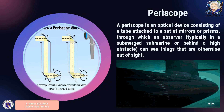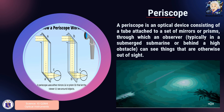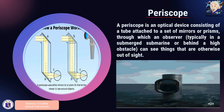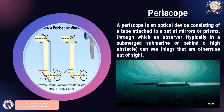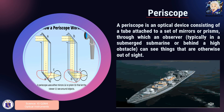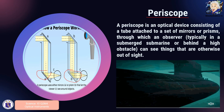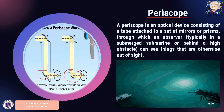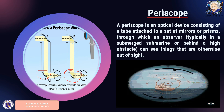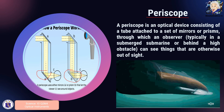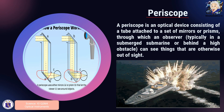The last type of optical instrument we are going to learn about is the periscope. A periscope can be made using mirrors or prisms, and it is typically used in a submerged submarine or behind a high obstacle so that you can see things that are otherwise out of sight.